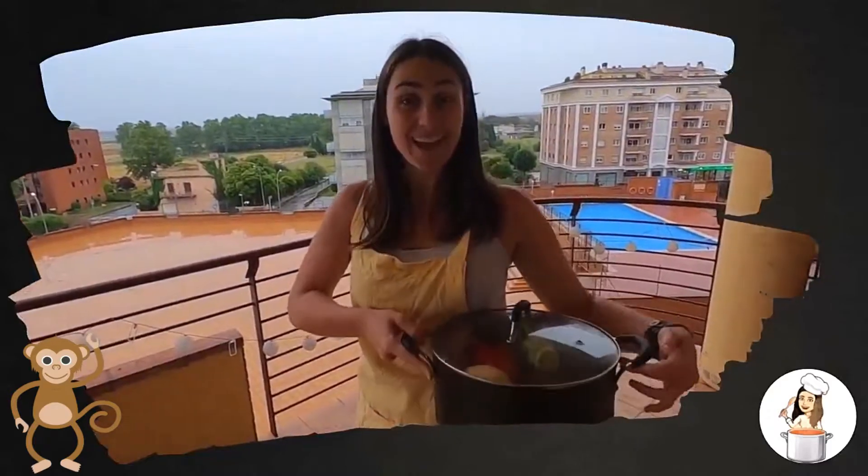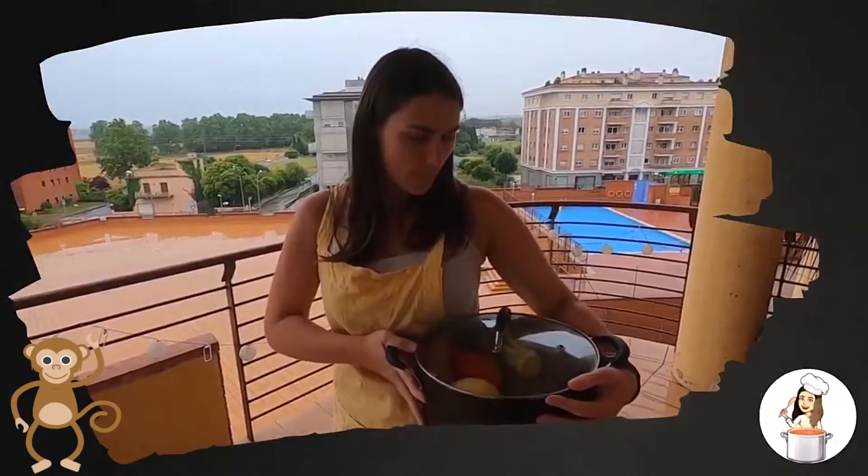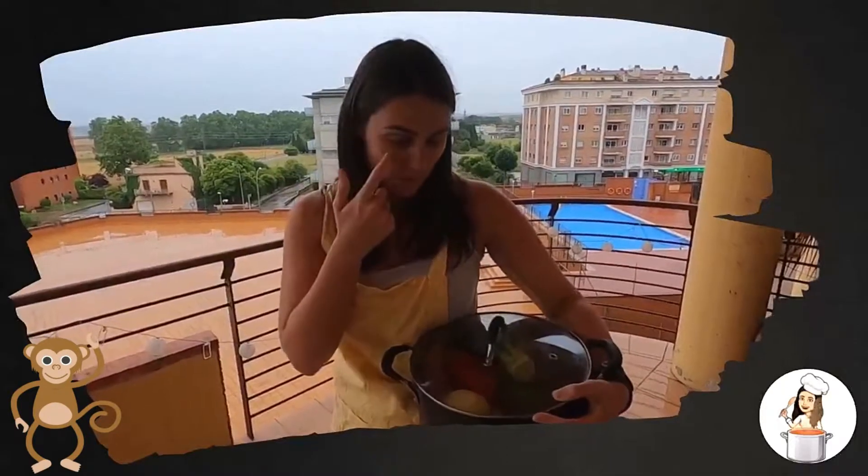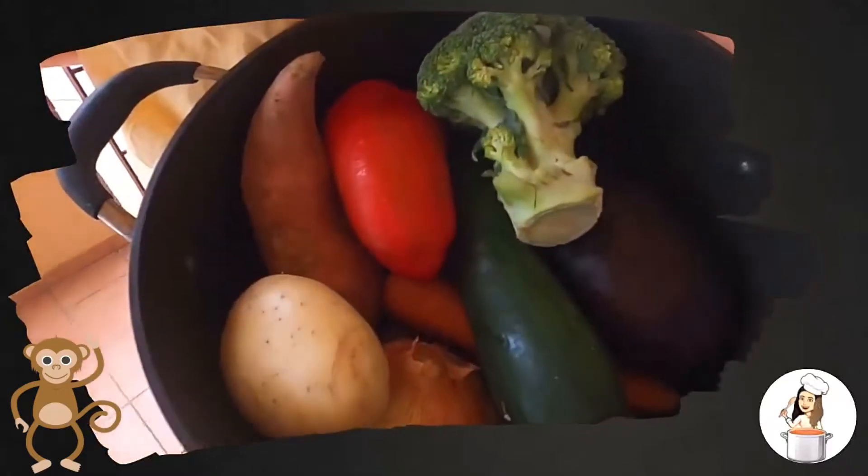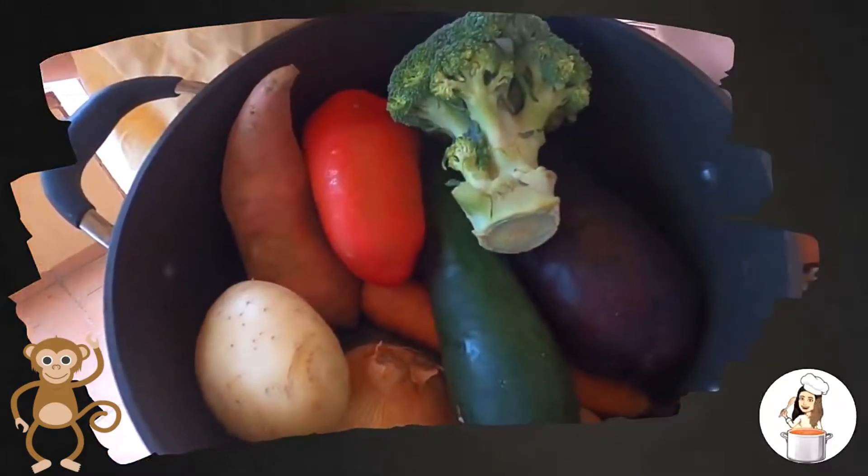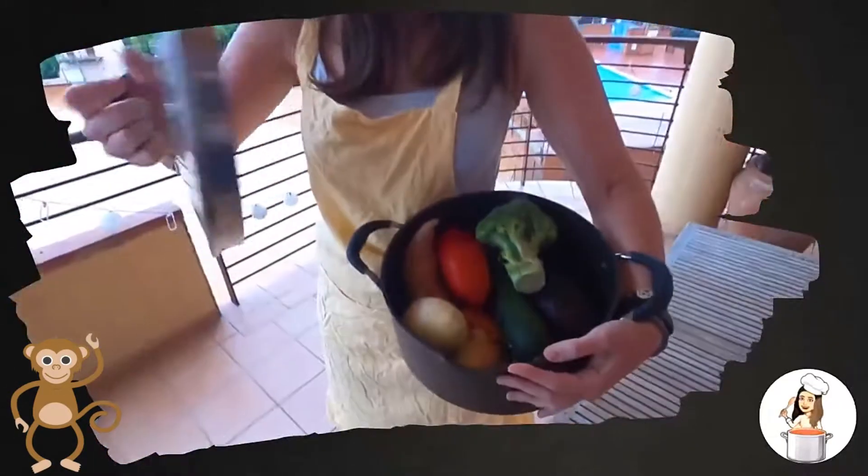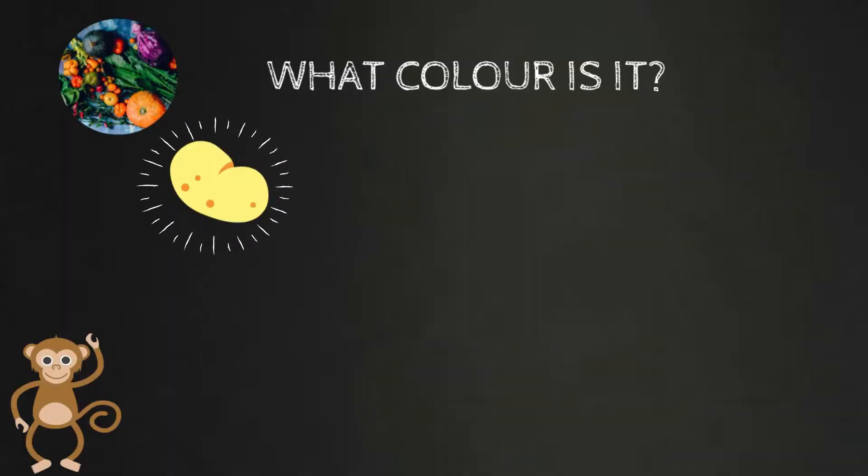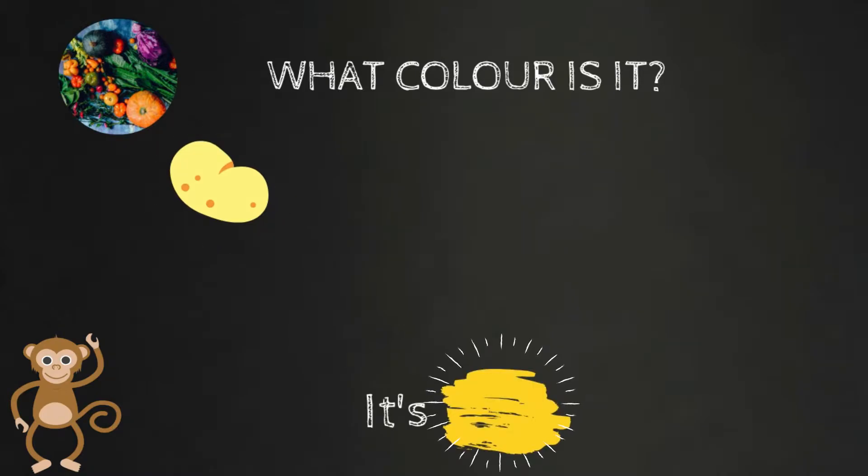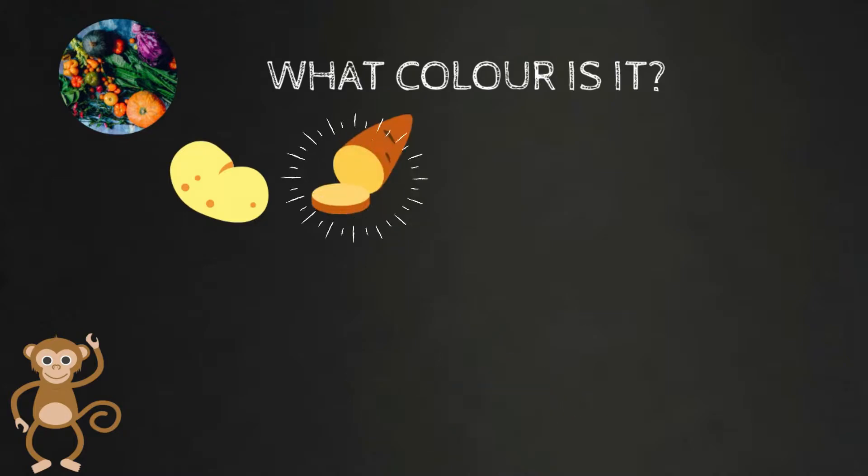Hi cheeky monkeys, how are you? I'm going to cook a soup but these are vegetables. What color are these vegetables? This is a potato. What color is it? It's yellow.